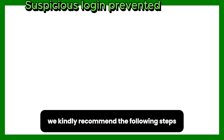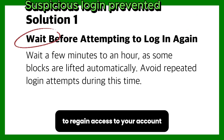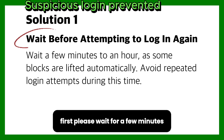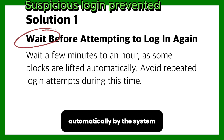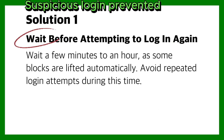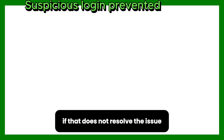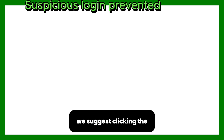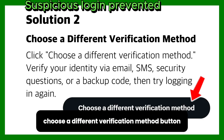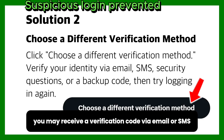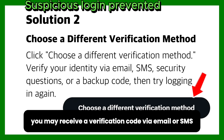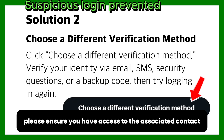To regain access, first please wait a few minutes as some restrictions may be lifted automatically by the system. If that does not resolve the issue, click the 'choose a different verification method' button. You may receive a verification code via email or SMS — please ensure you have access to the associated contact information.